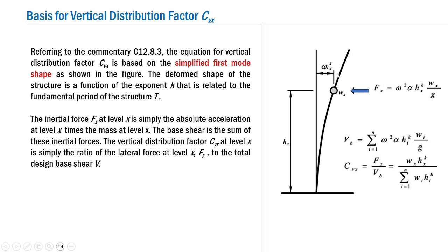If we express the deformed shape of the structure at any position HX as alpha times HX raised to K, we are in a position to calculate the inertial force developed at level X, which can be obtained as FX equals omega squared times alpha times HX raised to K times WX divided by g. Here WX divided by g represents the mass at level X, and omega squared times alpha times HX raised to K depends on the absolute acceleration of the mass at level X.